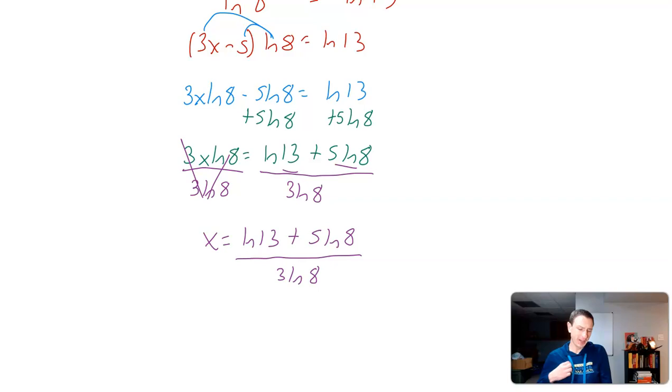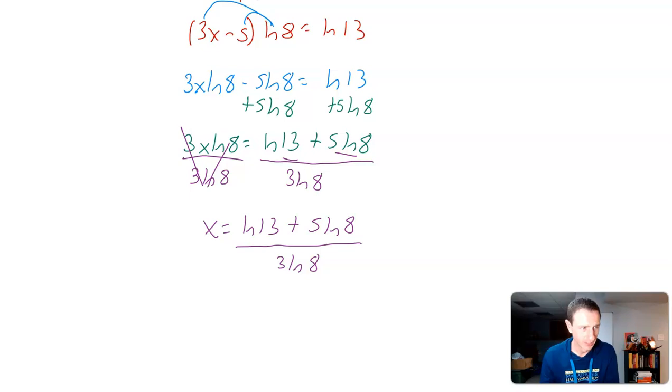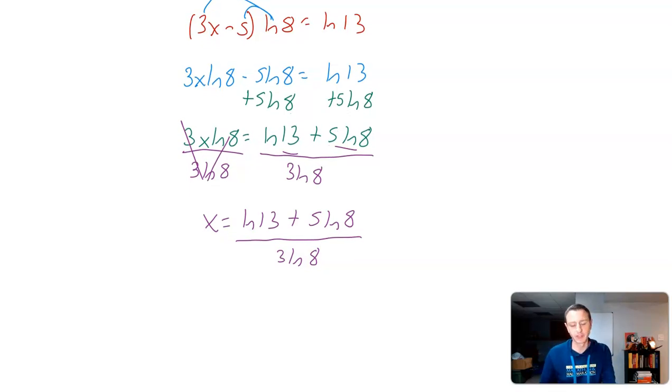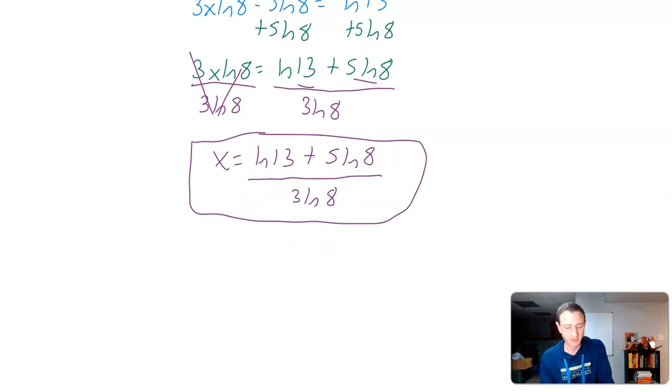I think favorably, we just want to leave it like this. I don't think it's necessary to rewrite it as ln(13)/(3·ln(8)) + 5·ln(8)/(3·ln(8)). I guess you could because the natural log of 8 would cancel out.